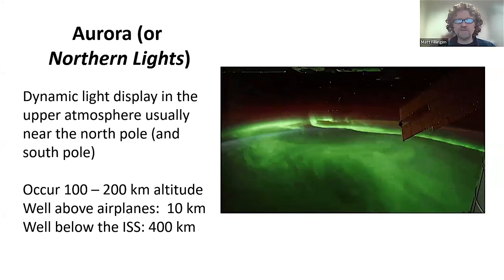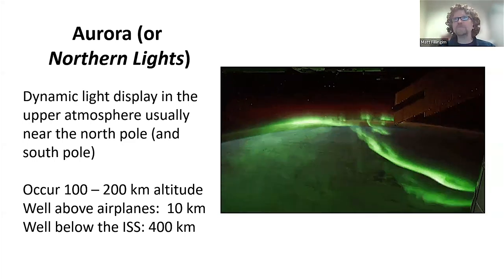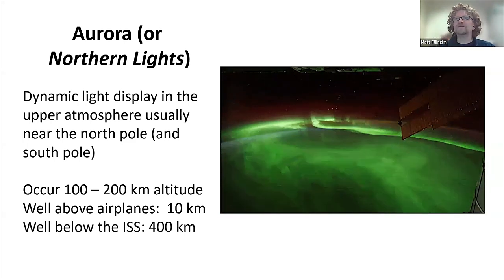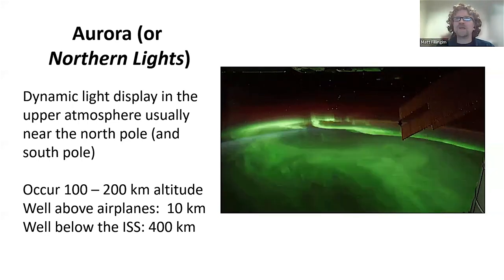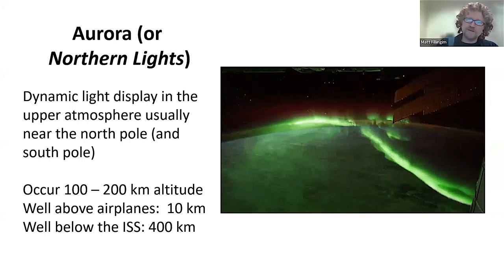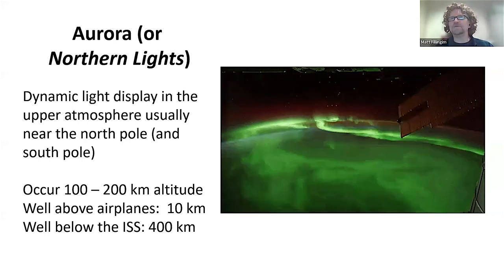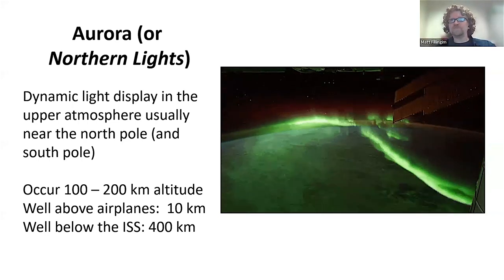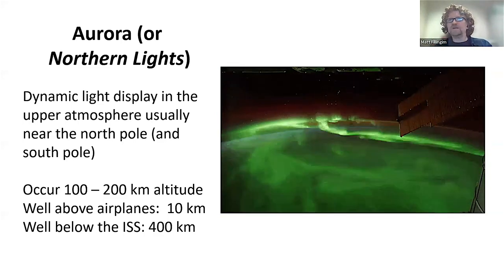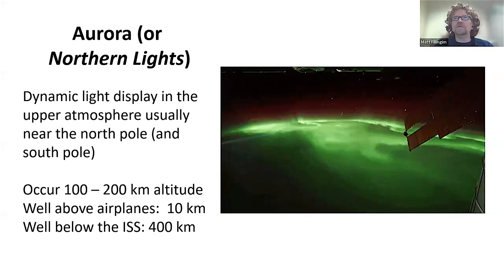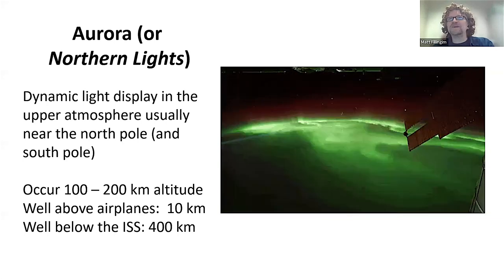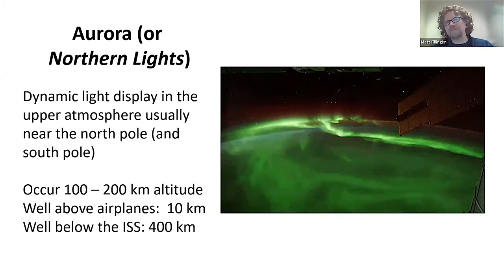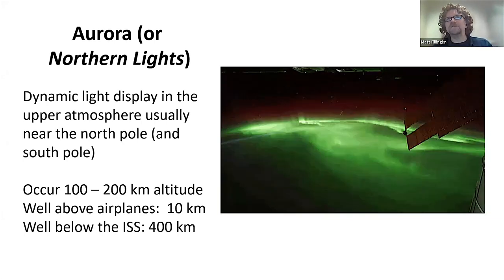This little movie is from the space station — you can see the little solar panel in the corner — looking down on the Aurora. You can see all these bright green bands just sort of floating there in the atmosphere, greatly sped up.